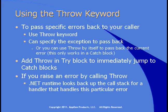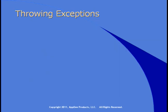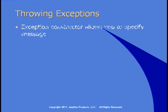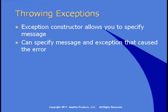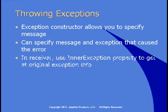And that's the same as if the error occurred because the user tried to open a file that doesn't exist, for example. When you throw an exception, you can specify the message that gets returned, as well as the exception that caused the error. And then in the code that you're throwing the exception to, you can use the inner exception property to get at the original exception information. This gives you the ability to trap for a specific exception and throw a different exception back to the calling code.